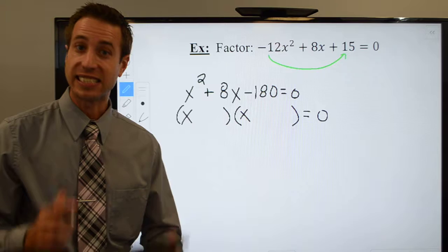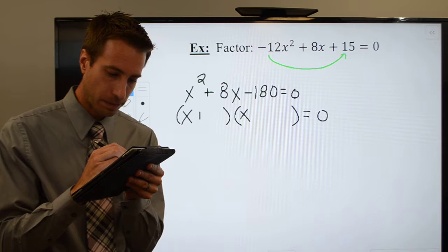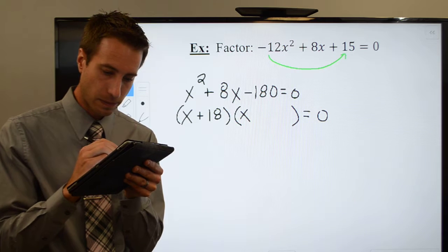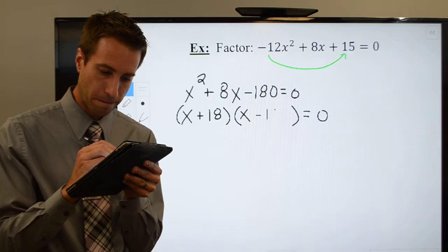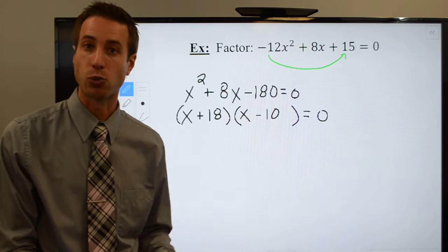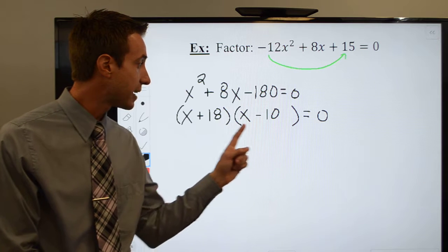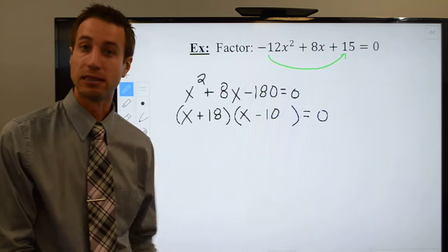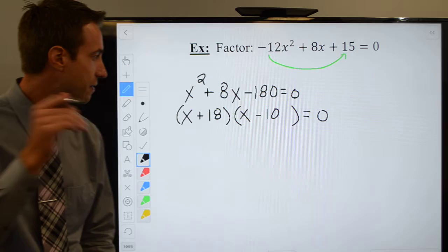I think 18 and 10 will work. Yeah. Positive 18 times a negative 10, minus 180. And a positive 18 minus 10 leaves me with a positive 8. Okay, fantastic.